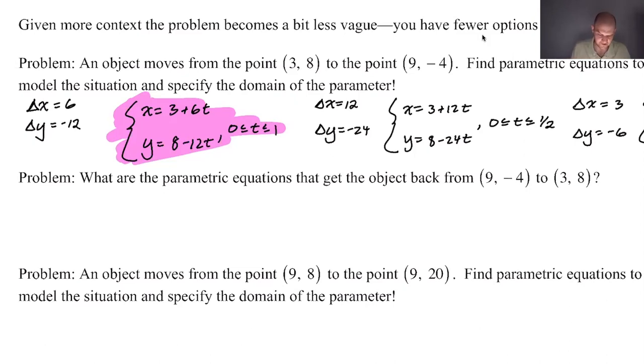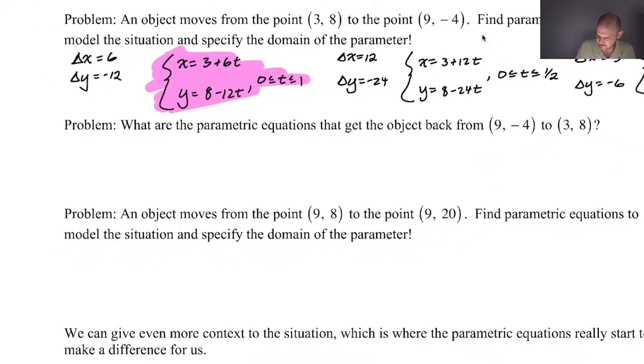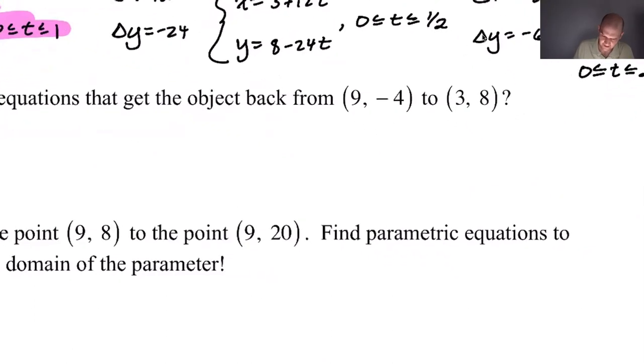So let's see. In the last video, we were moving an object from (3, 8) to (9, -4). Now in this question, we want to move from (9, -4) back to (3, 8), which on the surface is like not that bad. So what I could just do is say that delta X has to be -6 and delta Y has to be +12.